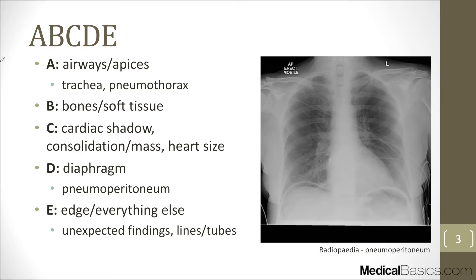The first approach that most people have heard about is going to be the A, B, C, D, and E's. A stands for airways or apices — just looking at all the different airways in the trachea, any type of pneumo that you may see in the apices. Then B covers all the different bones — checking for any broken ribs, the clavicle, scapula, and things like that, as well as soft tissue.